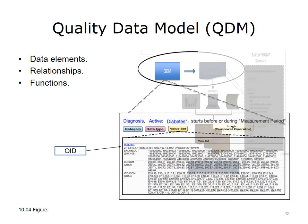The QDM is an information model intended to standardize data elements as clearly and consistently defined concepts used in quality measures. This slide shows how the model categorizes data into categories and data types with one or more attributes. The model also defines relationships amongst data elements and functions to allow further specificity and constraints in defining data used in quality measures.